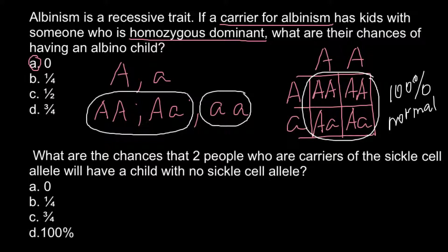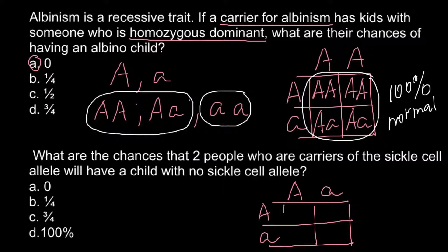Now the second question: what are the chances that two people who are carriers of the sickle cell allele will have a child with no sickle cell allele? Carriers means heterozygous genotype. We build a Punnett square with both parents as carriers, so both are heterozygous. The Punnett square gives us: homozygous dominant, heterozygous, heterozygous, and homozygous recessive.